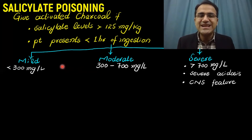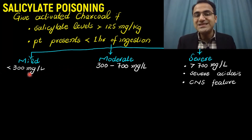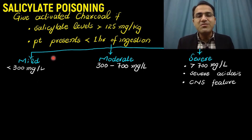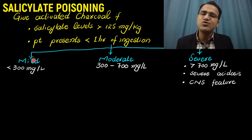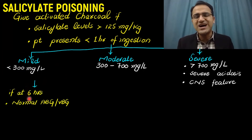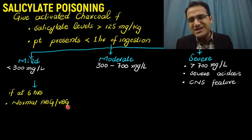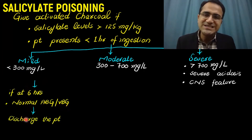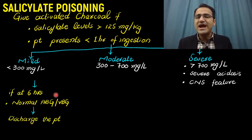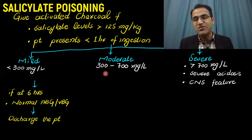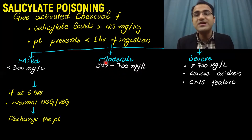If salicylate levels are less than 300 mg per litre, it is mild poisoning. In mild cases, you observe the patient for 6 hours, and if the patient has normal ABGs or venous blood gases, you can discharge them. If the salicylate level is between 300 to 700 mg per litre, that is moderate poisoning.